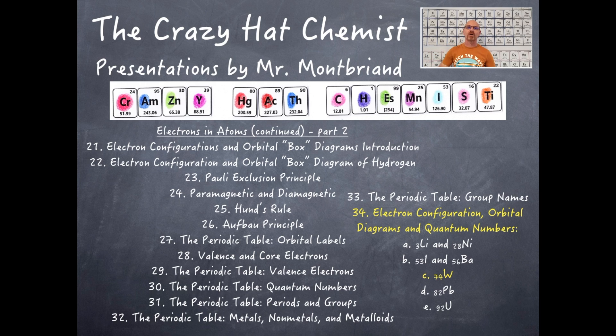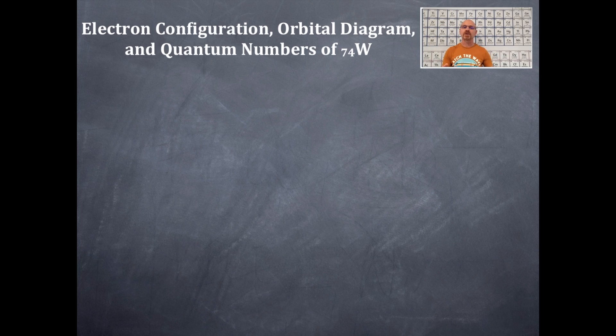Welcome to the Crazy Hat Chemist. So here we go again today, another video in electrons in atoms. BAM! So today we're still doing electron configurations, orbital box diagrams, quantum numbers, and this time we're going to do W74.